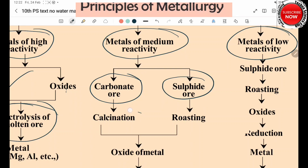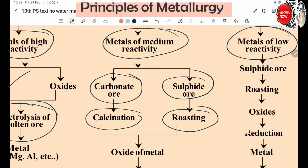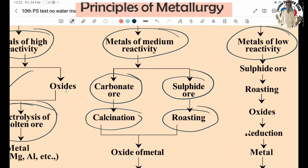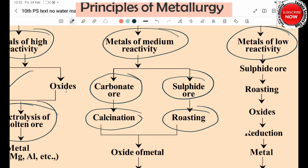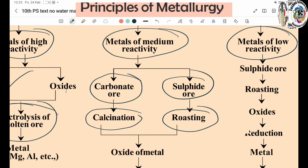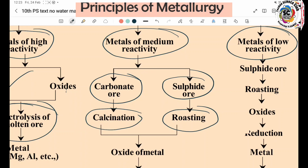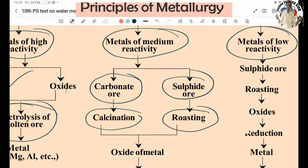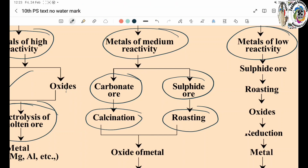Carbonate Ores and Sulfide Ores — these two types of ores are associated with Moderately Reactive Metals. Properties include Malleability, Ductility, Sonority. Chemical Processing such as Roasting and Calcination are used. Reduction involves removal of Oxygen — for example using Hydrogen.